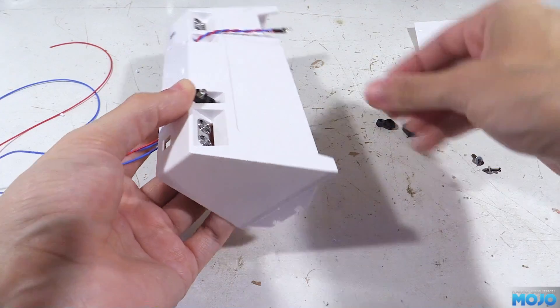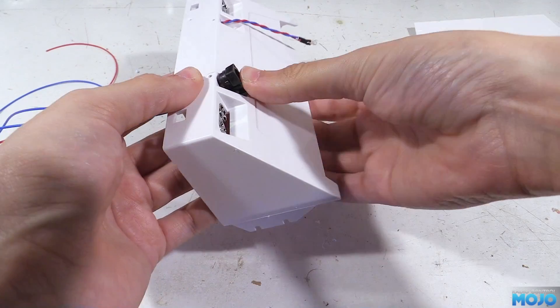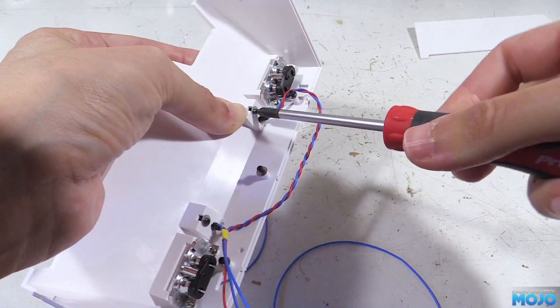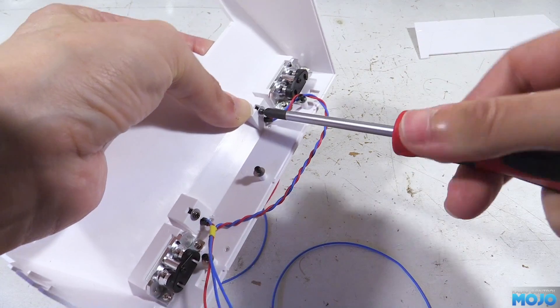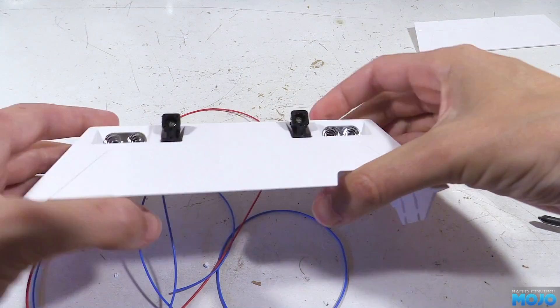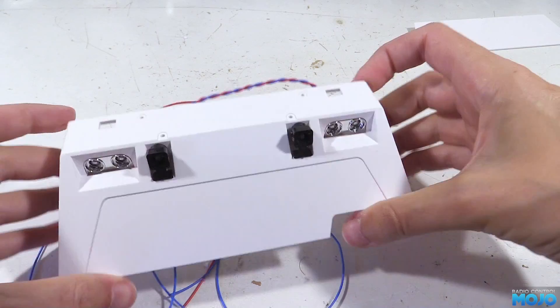To fit, we post the LEDs through the holes that we just made. Then we fit the LED clips over the wires and push the LEDs down so the base of the LED is in the clip. Offer up the pods then refit the screws. And that's about it really.